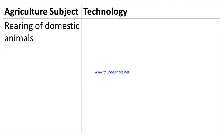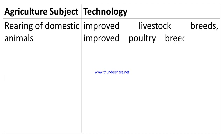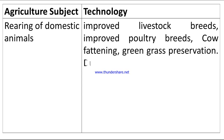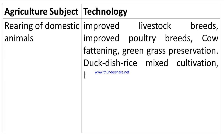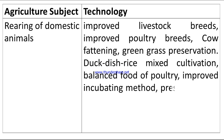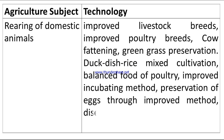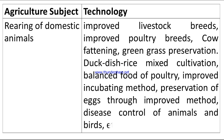Rearing of domestic animals technologies include: improved livestock breeds, improved poultry breeds, cow fattening, green grass preservation, duck-fish-rice mixed cultivation, balanced food for poultry, improved incubating methods, preservation of eggs through improved methods, and disease control of animals and birds, etc.